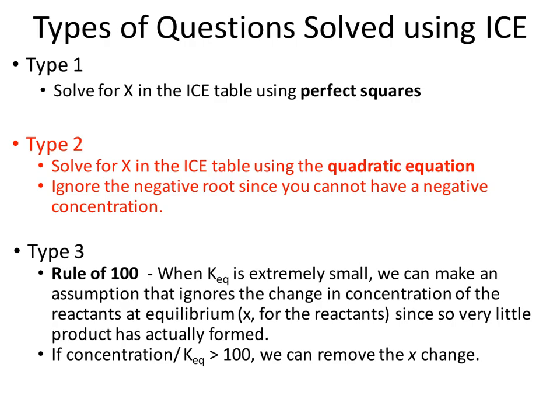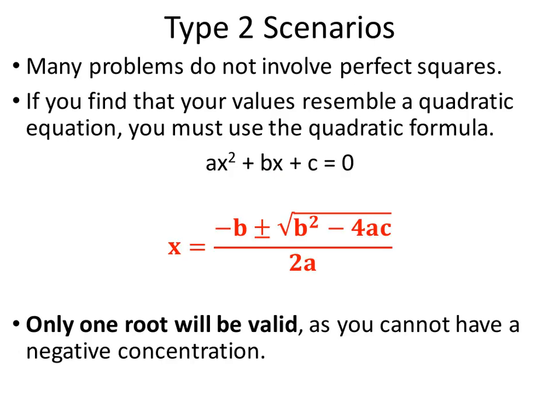One root is not going to be valid. The one that gives us a negative concentration cannot be used because we cannot have a negative concentration — the change can't be bigger than our original concentrations. Now, this is our quadratic equation. First, we have to get our equation into the format ax² + bx + c = 0, making sure x² is positive. The coefficients give us values for a, b, and c, and then x equals negative b plus or minus the square root of b squared minus 4ac, all over 2a.